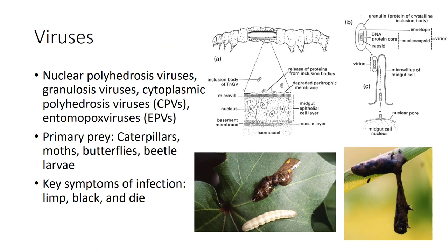Many viruses infect and kill insects, but those with potential for insect control are from just three viral groups, all with protein-inclusion bodies which enclose the virus particles. These occluded viral species are considered safe because they have been found only in arthropods and appear unable to replicate in vertebrates. The useful entomopathogenic groups are the nuclear polyhedrosis viruses, granulosis viruses — both belonging to the baculoviruses — the cytoplasmic polyhedrosis viruses (CPVs), and the entomopox viruses (EPVs). Baculoviruses replicate within the nuclei of host cells, whereas CPVs and EPVs replicate in the host cell cytoplasm.